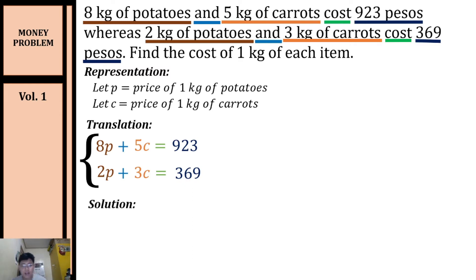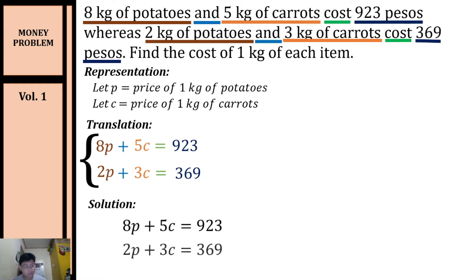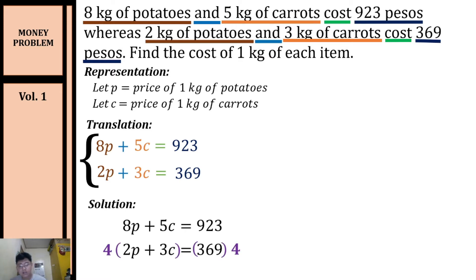We can solve for the value of p and c by using either elimination method or substitution method. Let's use elimination method. To eliminate one of the variables, let's make sure it is written in standard form. It is written in standard form — let's decide which variable to eliminate.